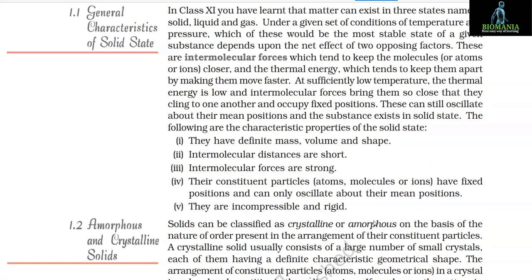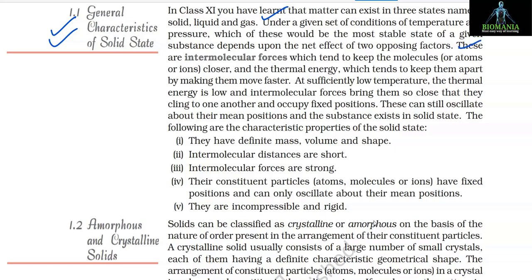1.1 General Characteristics of Solid State. In Class 11 you learned that matter can exist in three states — solid, liquid, and gas. Which of these is the most stable state of a given substance depends upon the net effect of two opposing factors: intermolecular forces, which tend to keep molecules, atoms, or ions closer together, and thermal energy, which tends to keep them apart by making them move faster.